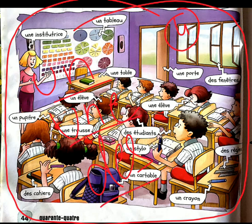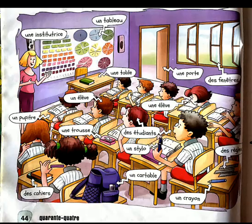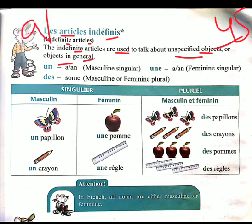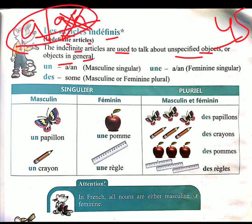Today's topic is on page number 45. The topic is called les articles indéfinis — the indefinite article. Indefinite articles are used to talk about an unspecified object or objects generally. In English we just add 'a' or 'an,' and those are the indefinite articles in English.